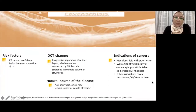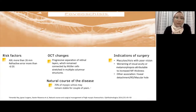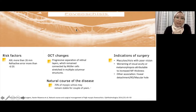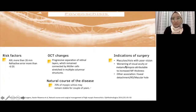Allow me to highlight a few basic issues pertaining to myopic foveal schisis. It usually occurs in a long eyeball with a length of more than 26 mm and a very high refractive error of -6 or -8. The OCT description shows some progressive separation of the retinal layers, which remain connected by stretched Müller cells, appearing as multiple columnar structures on OCT. Approximately 70% of cases are fairly stable for a couple of years. Surgery is indicated only if the schisis is associated with vision loss or associated OCT changes such as foveal detachment, retinal detachment, or macular hole.